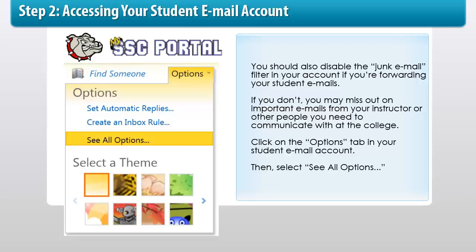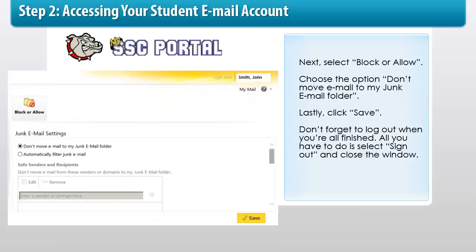You should also disable the junk email filter in your account if you're forwarding your student emails. If you don't, you may miss out on important emails from your instructor or other people you need to communicate with at the college. Click on the Options tab in your student email account, then select See All Options. Next, select Block or Allow. Choose the option Don't move email to my junk email folder. Lastly, click Save.